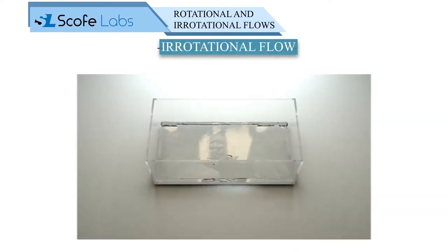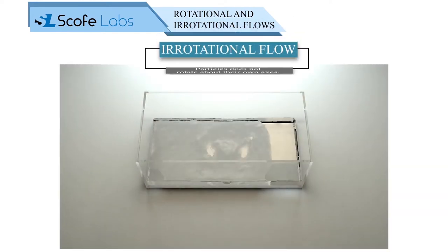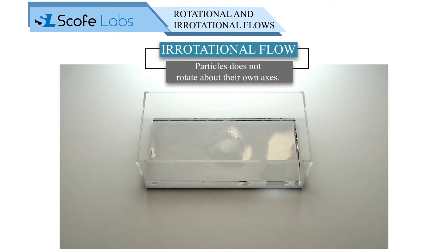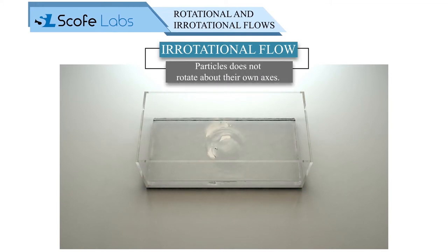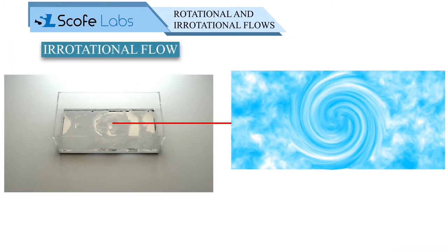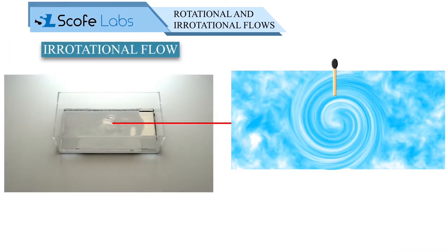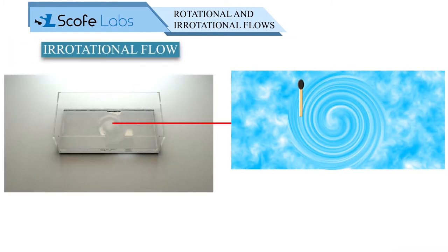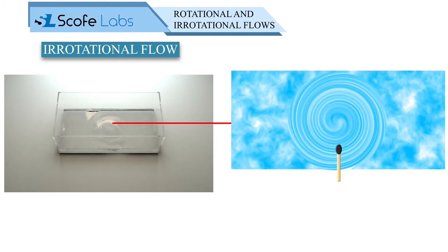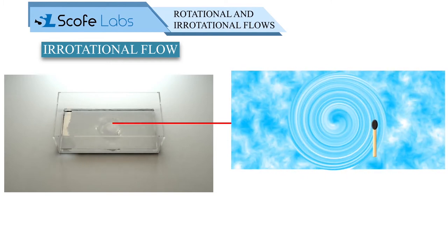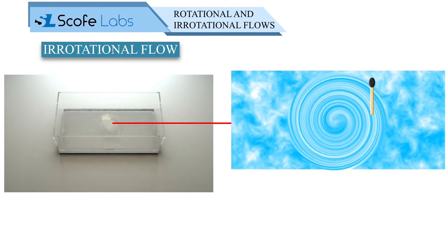The flow in which the fluid particles do not rotate about their own axis while flowing is called irrotational flow. Let us consider a matchstick on the irrotational flow — here it can be seen that the matchstick does not rotate about its own axis.